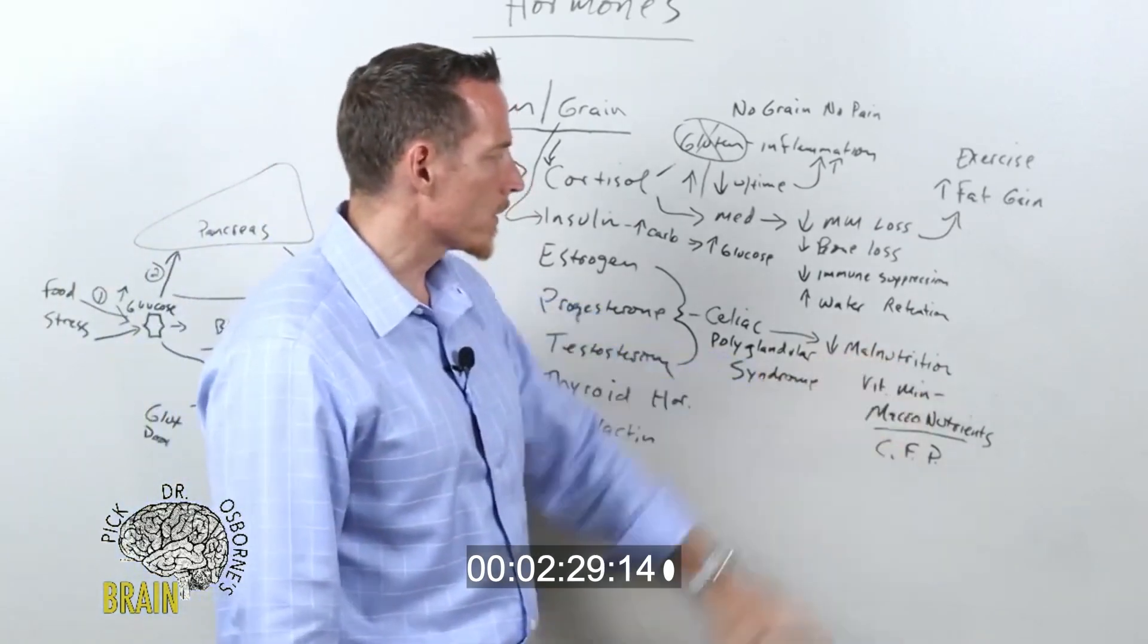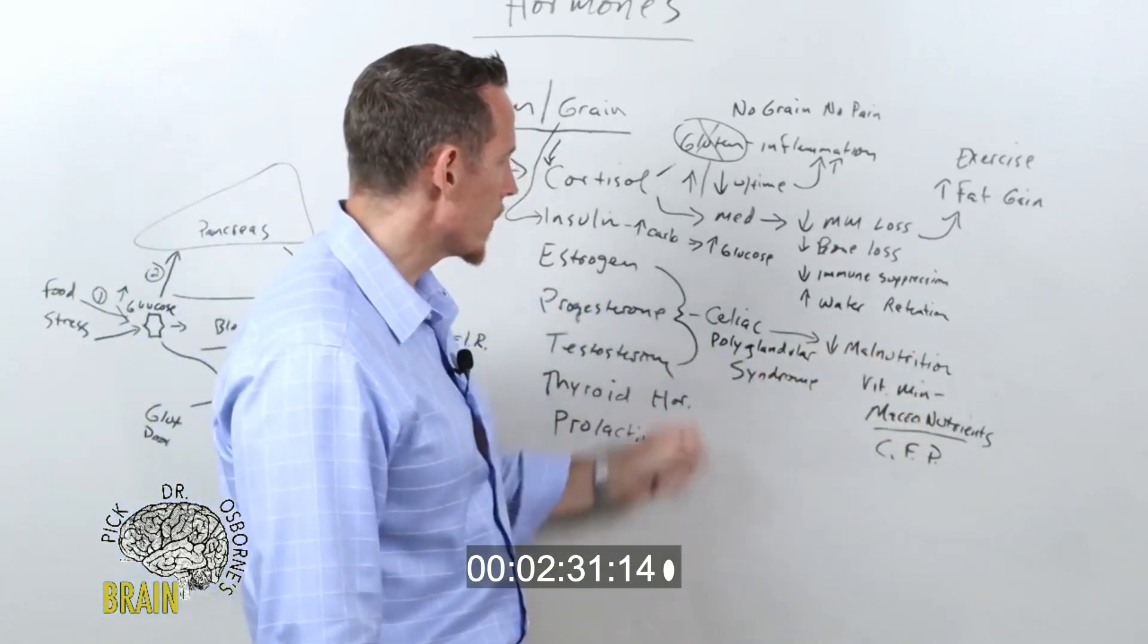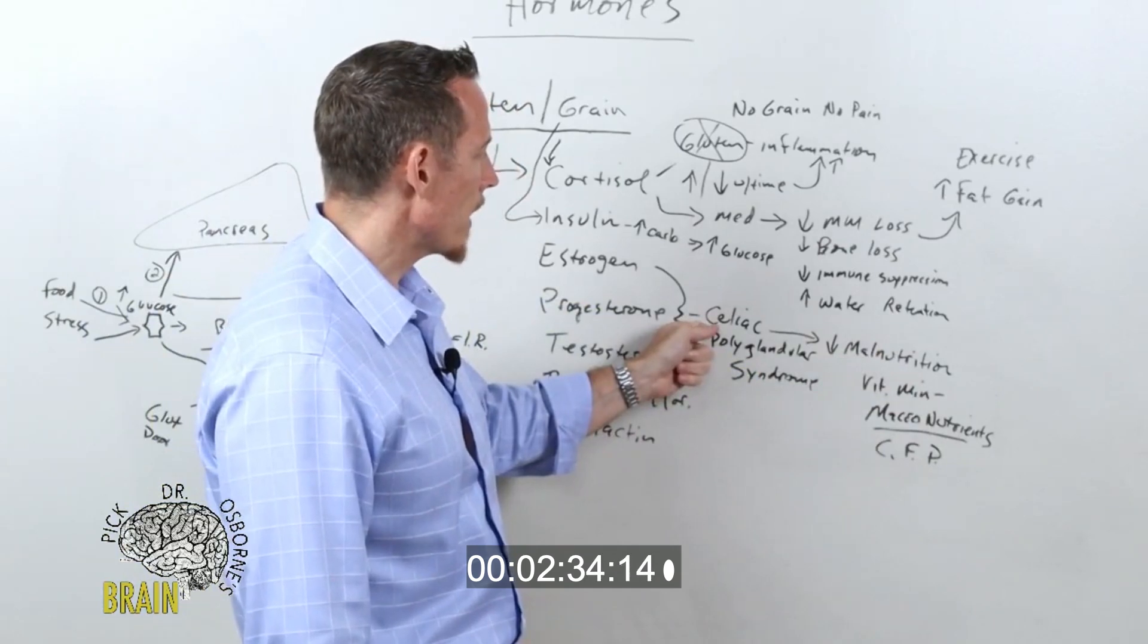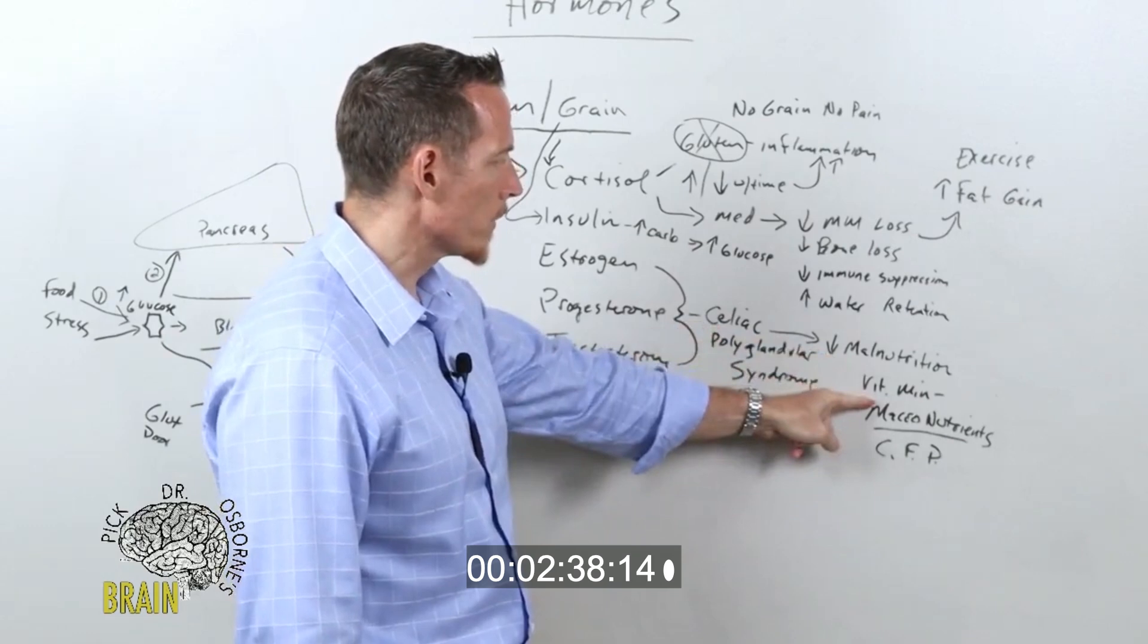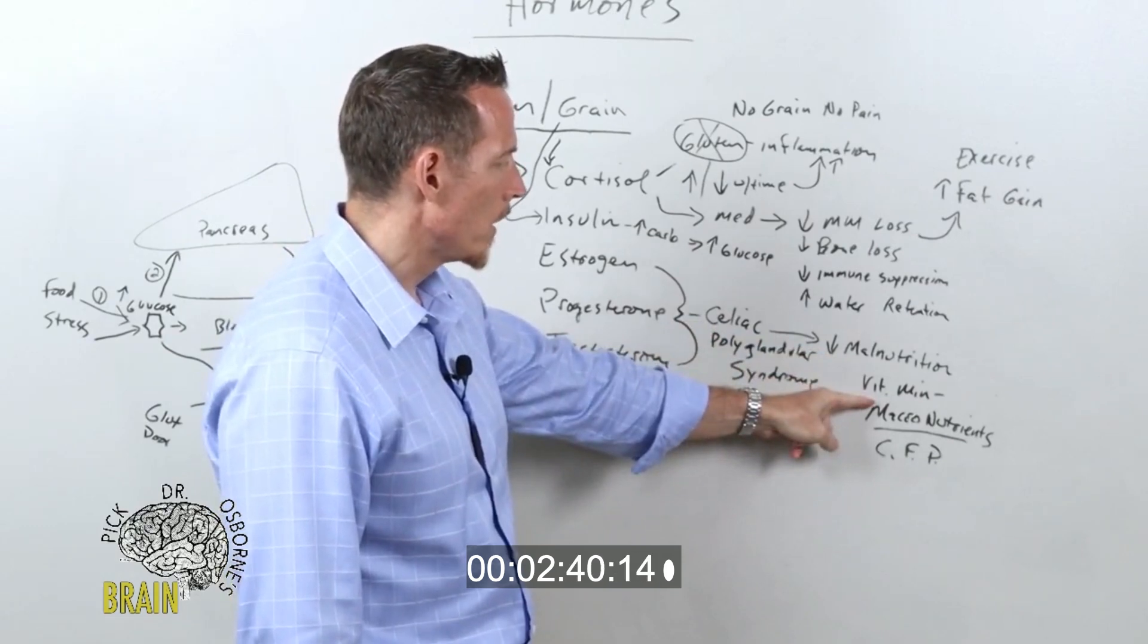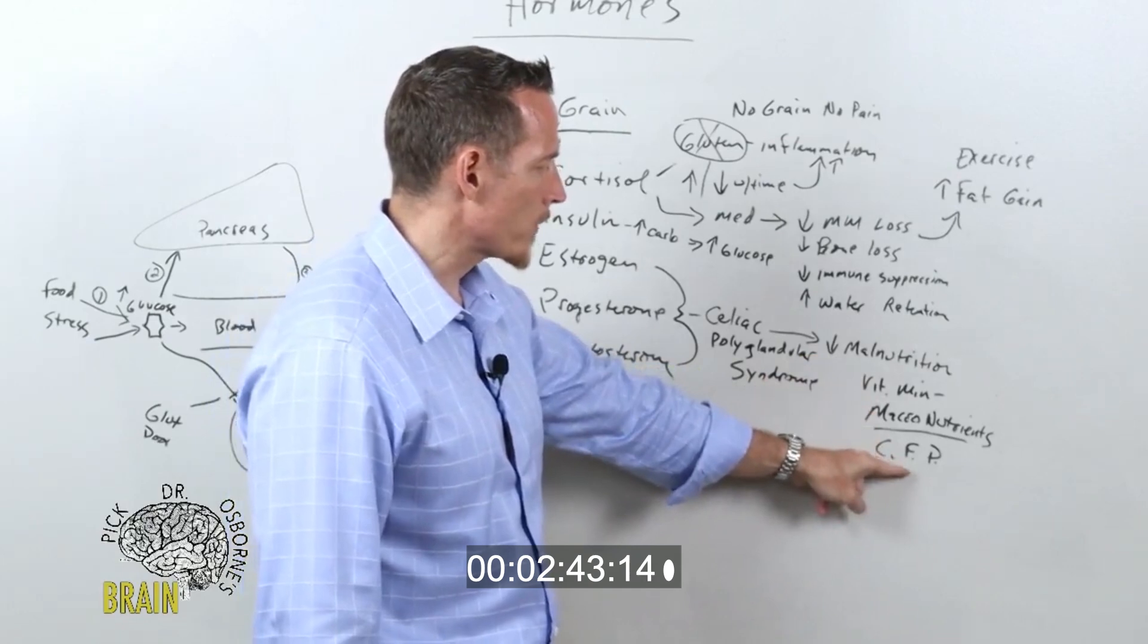So celiac, gluten sensitivity as it relates to celiac, causes severe malnutrition, which leads to massive vitamin and mineral deficiency and macronutrient deficiency, especially fat malabsorption.